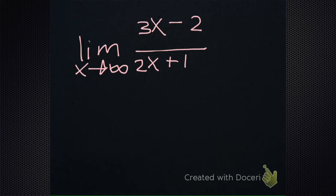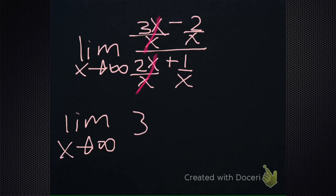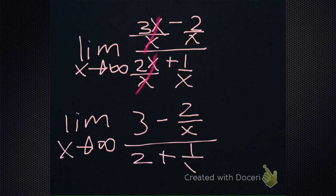That's going to be 3x minus 2 divided by x, divided by x. Because when I'm distributing in that 1 over x, it goes to each term. And then you're left with the limit as x goes to infinity of 3 minus 2 over x, over 2 plus 1 over x.